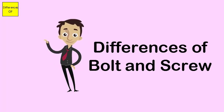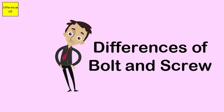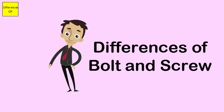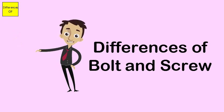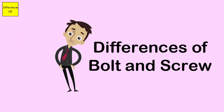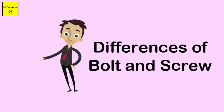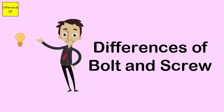A screw is tightened by employing a torque to its head and threading it into the materials that are to be joined and held together. A bolt holds and compresses materials together. A screw is tightened by rotating it clockwise, while a bolt needs a nut wherein the torque is applied.